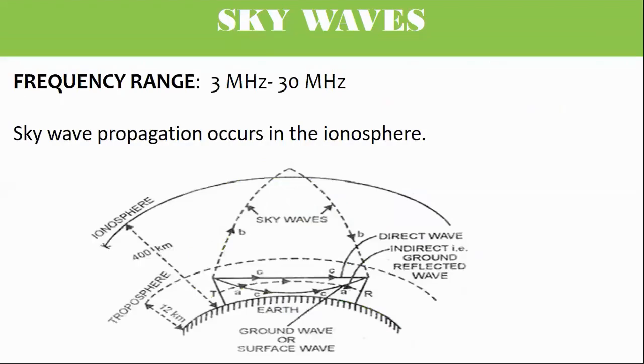Frequency range of sky wave is from 3 megahertz to 30 megahertz. In this frequency range, long-distance communication can be achieved by ionosphere reflection of radio waves back towards the Earth.